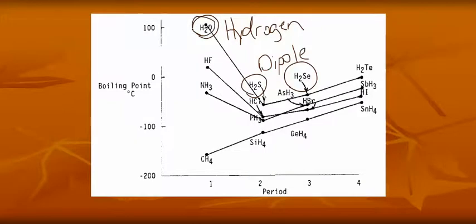Water boils at 100, H2S boils about negative 50 or so. And that's because hydrogen bonds are very strong intermolecular attractions, they're hard to break. Dipole, while strong, are weaker than hydrogen. So dipole are easier to break than hydrogen bonds.